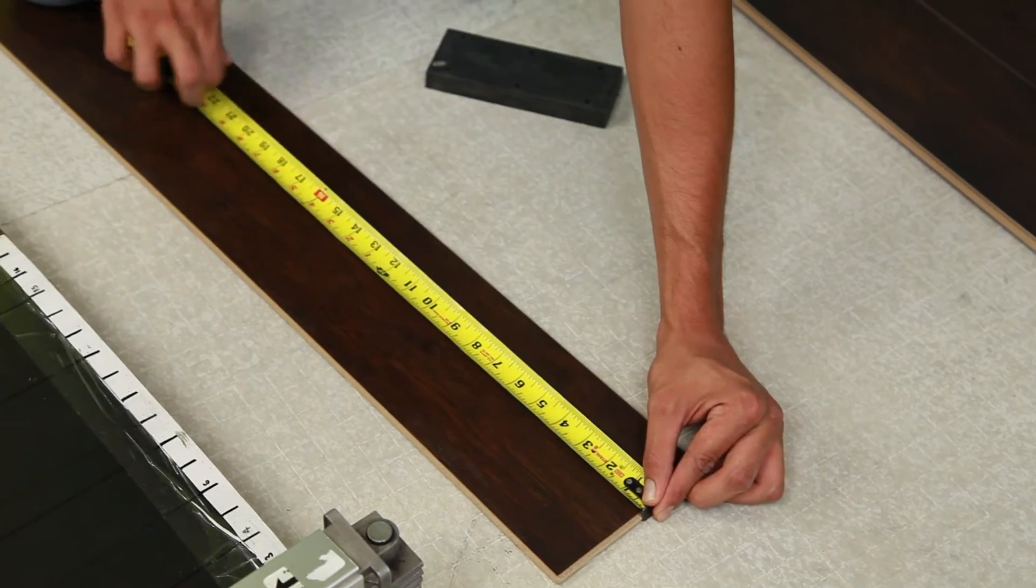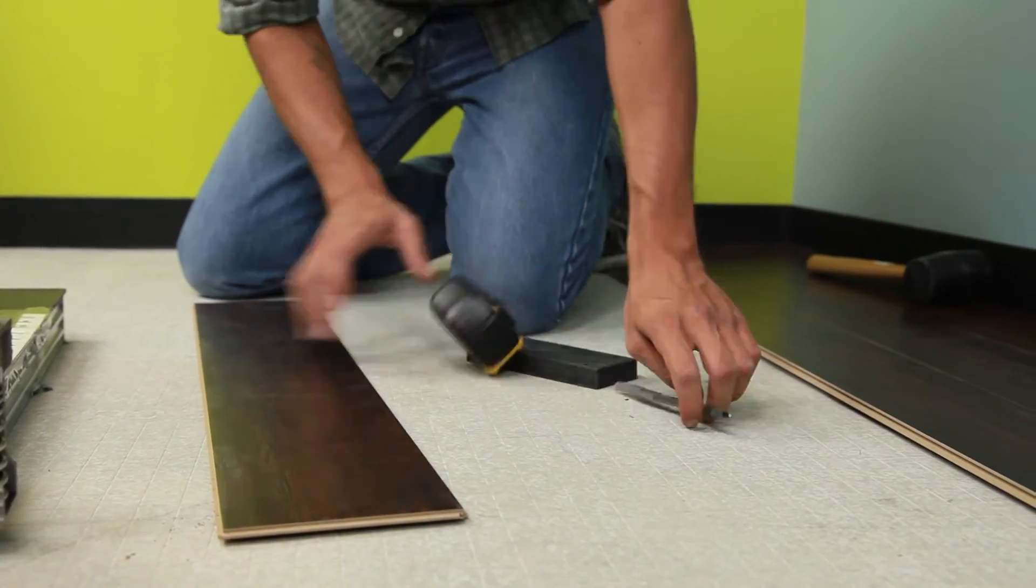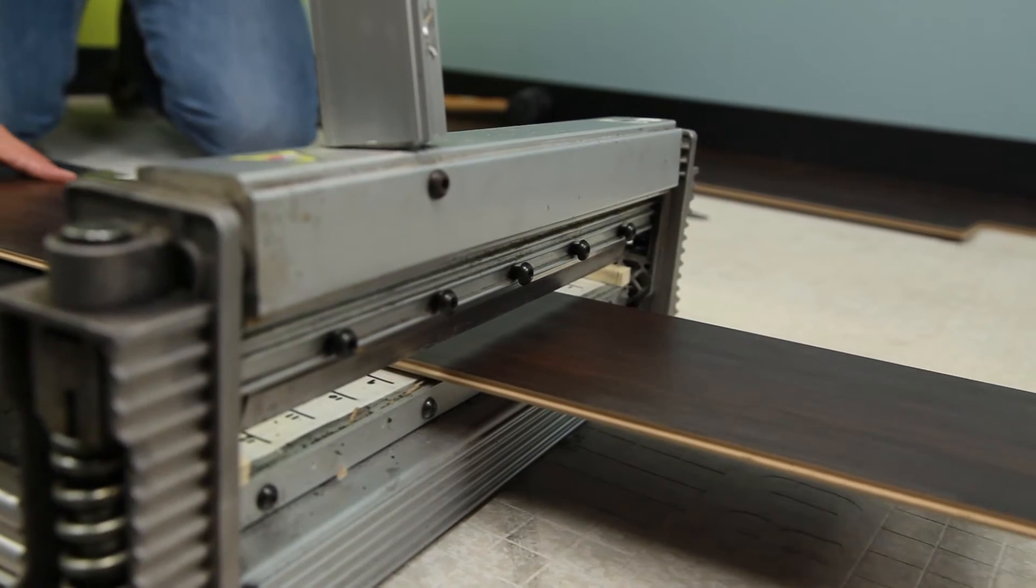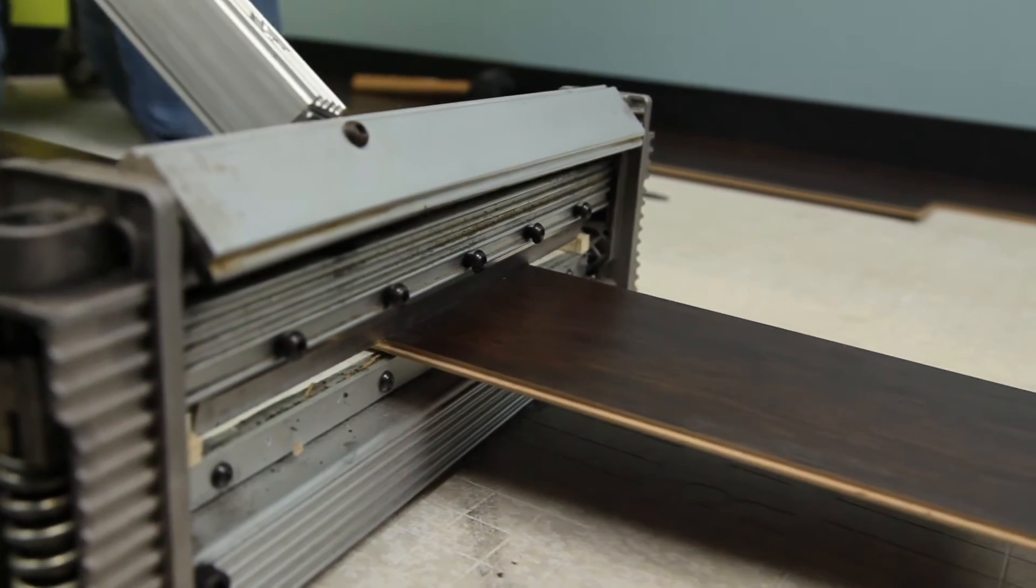When you come up to a wall and need to cut a plank, simply measure the space and mark on the plank where you need to cut it. We recommend cutting the planks from the surface side to help create a nice finished edge.